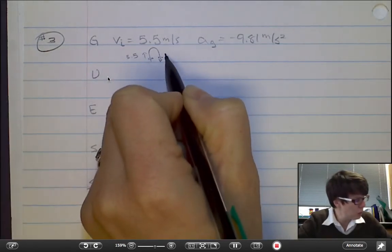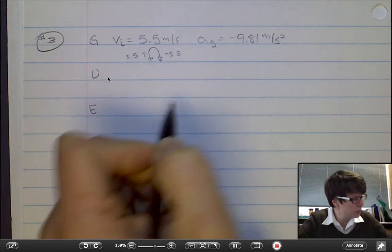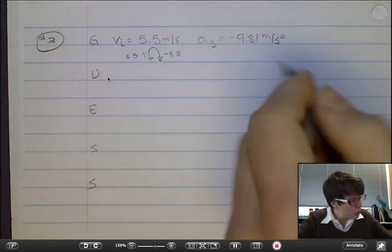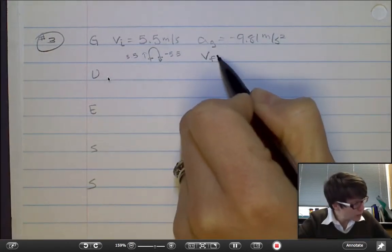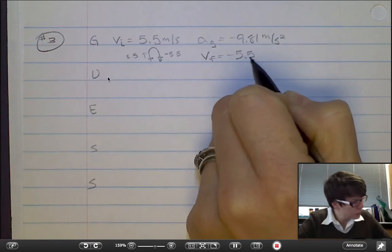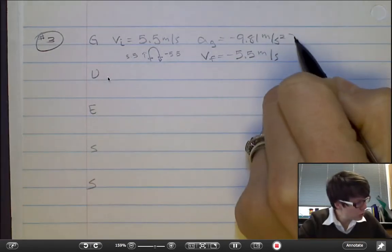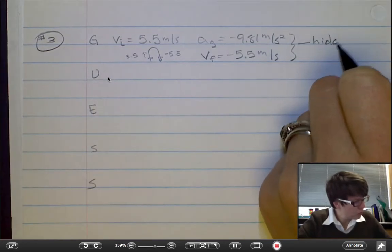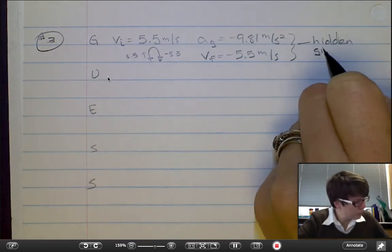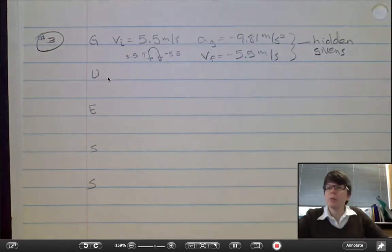Coming down, we'll be at negative 5.5 meters per second. So we know a final velocity. Both of those are hidden in the problem itself.